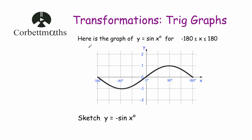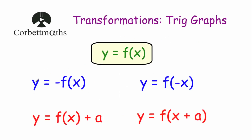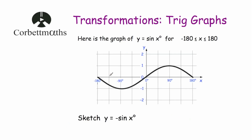Our first question shows the graph of y = sin x for values of x between -180° and 180°, and we've been asked to sketch y = -sin x. As you can see, that is our y = -f(x) transformation — a reflection in the x-axis, so it flips the graph over vertically. When doing questions like this with trig graphs, I focus on the key points, such as (-180°, 0), (-90°, 1), (0°, 0), and so on, and consider where they go after applying the transformation.